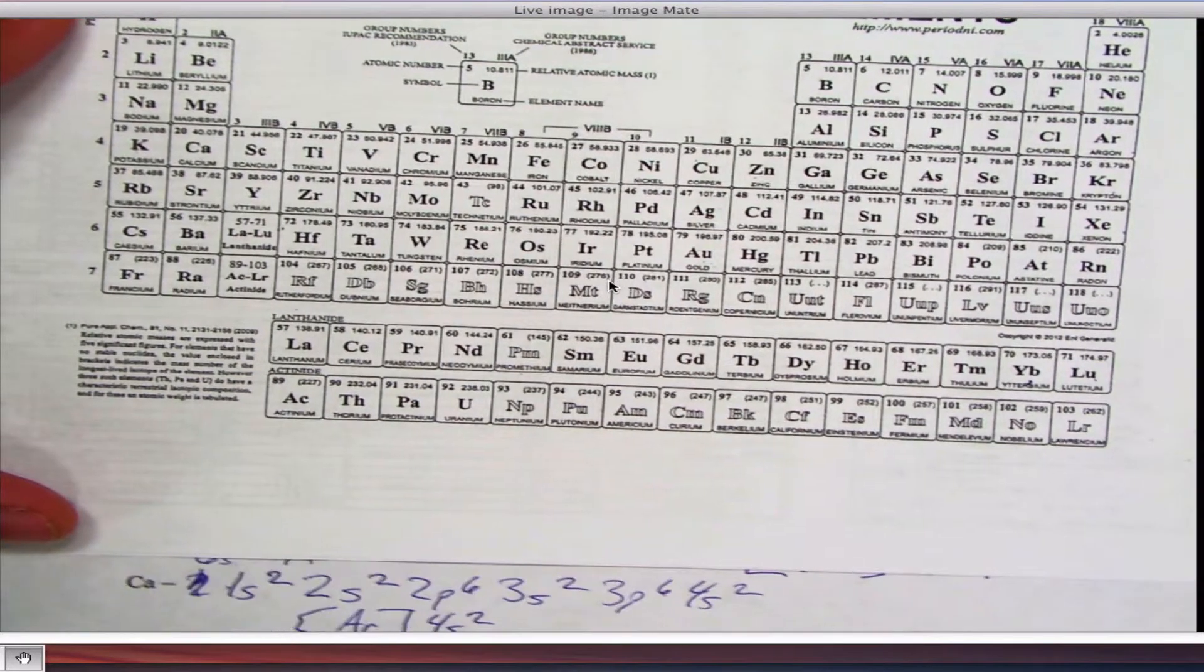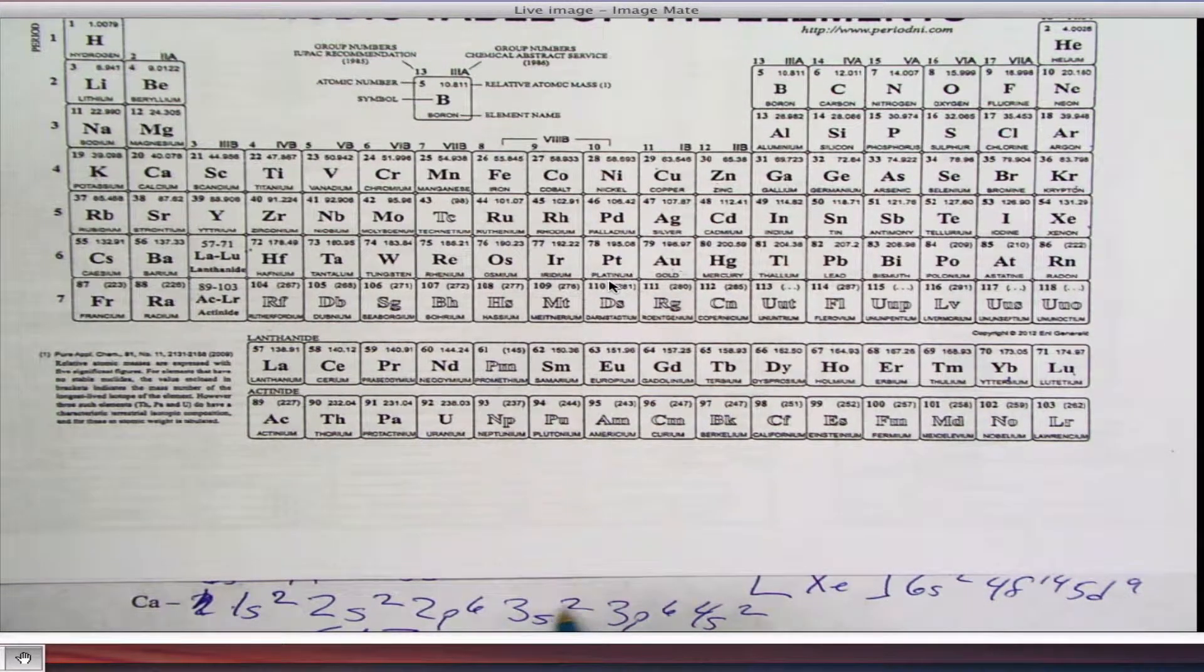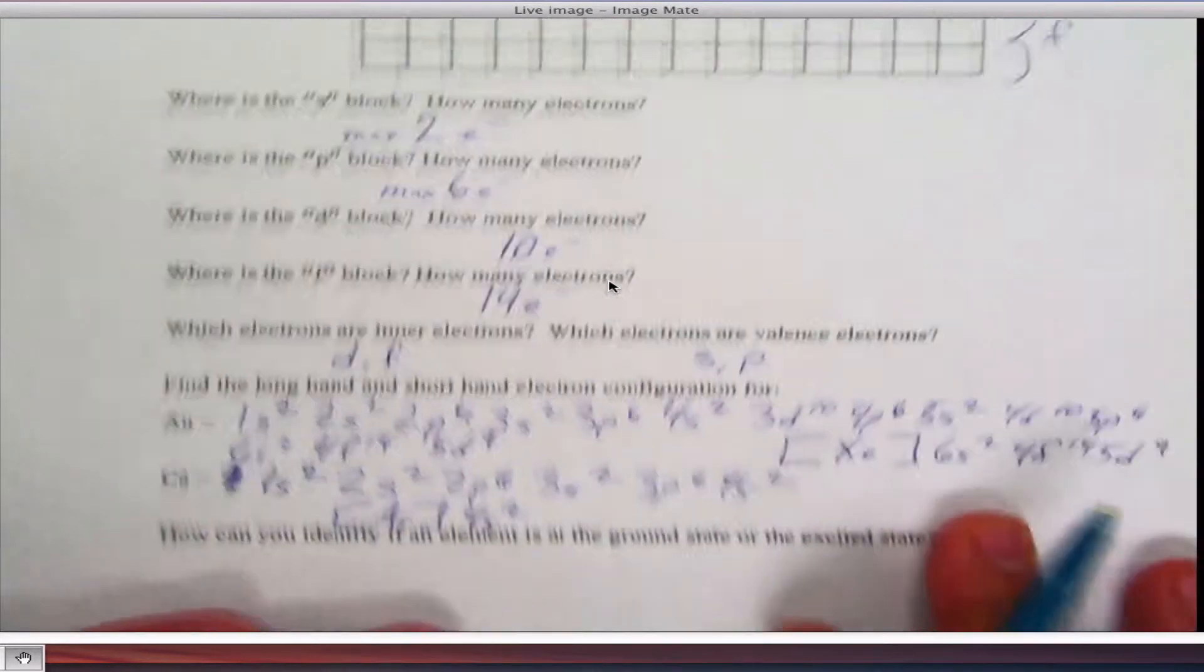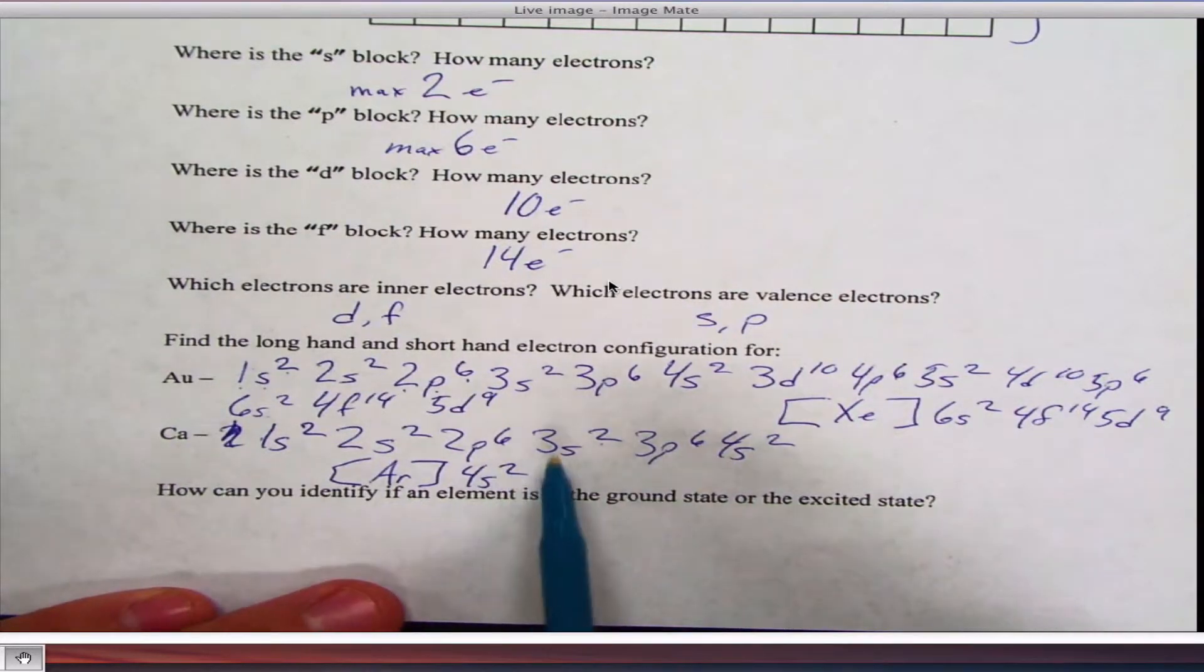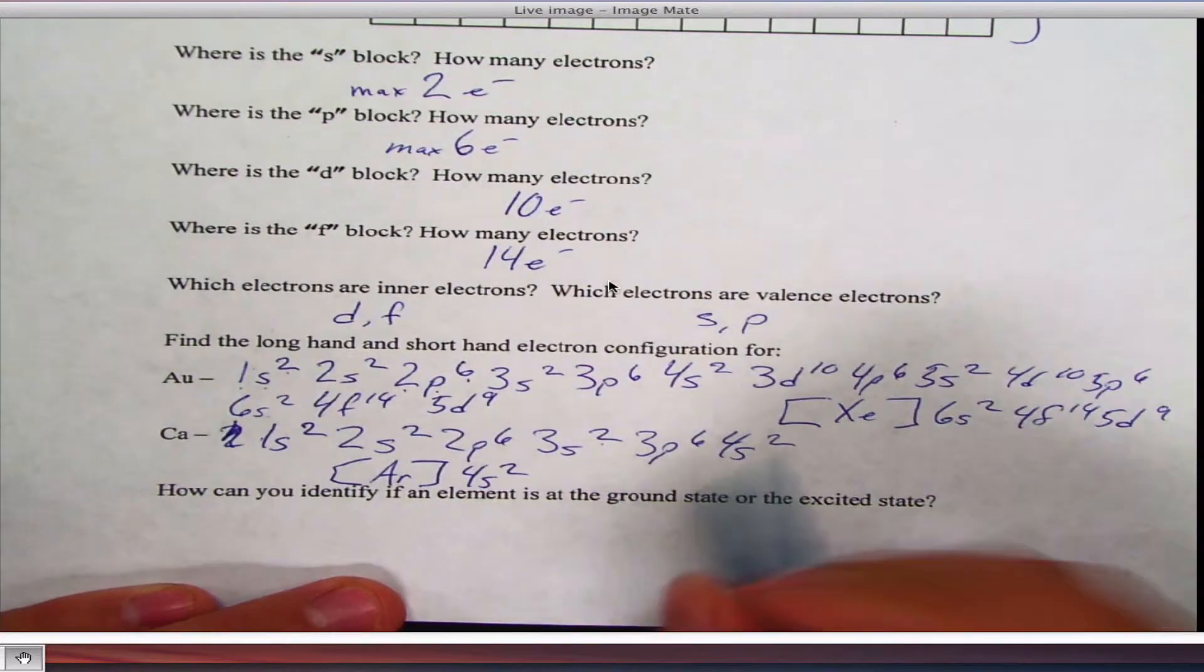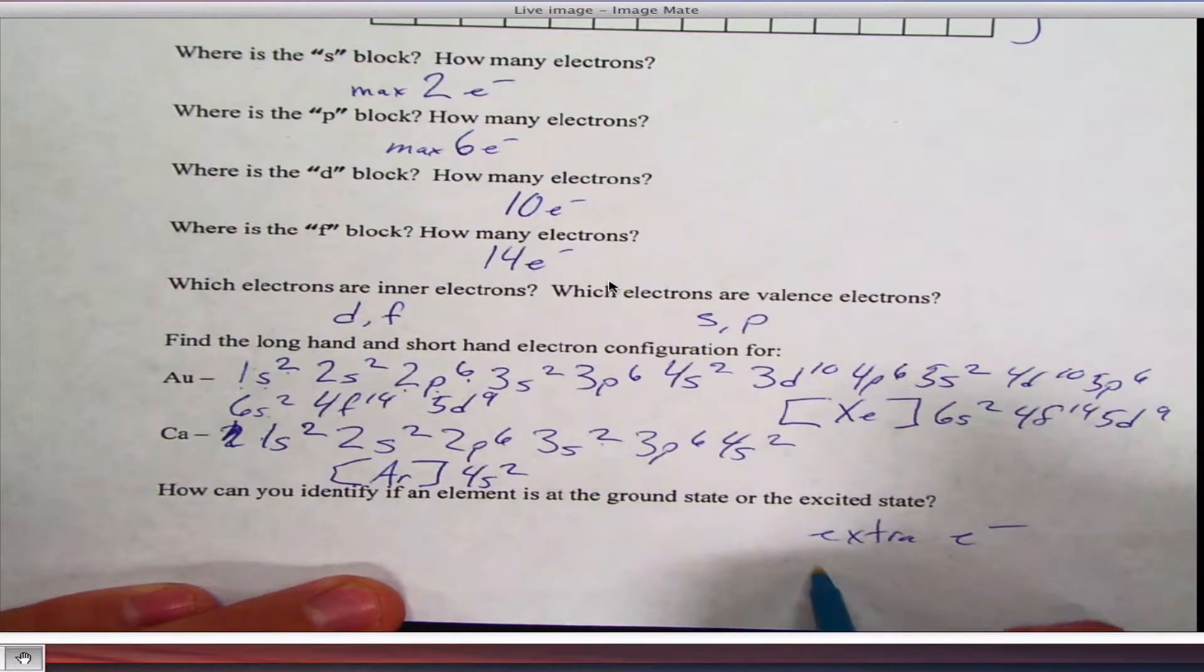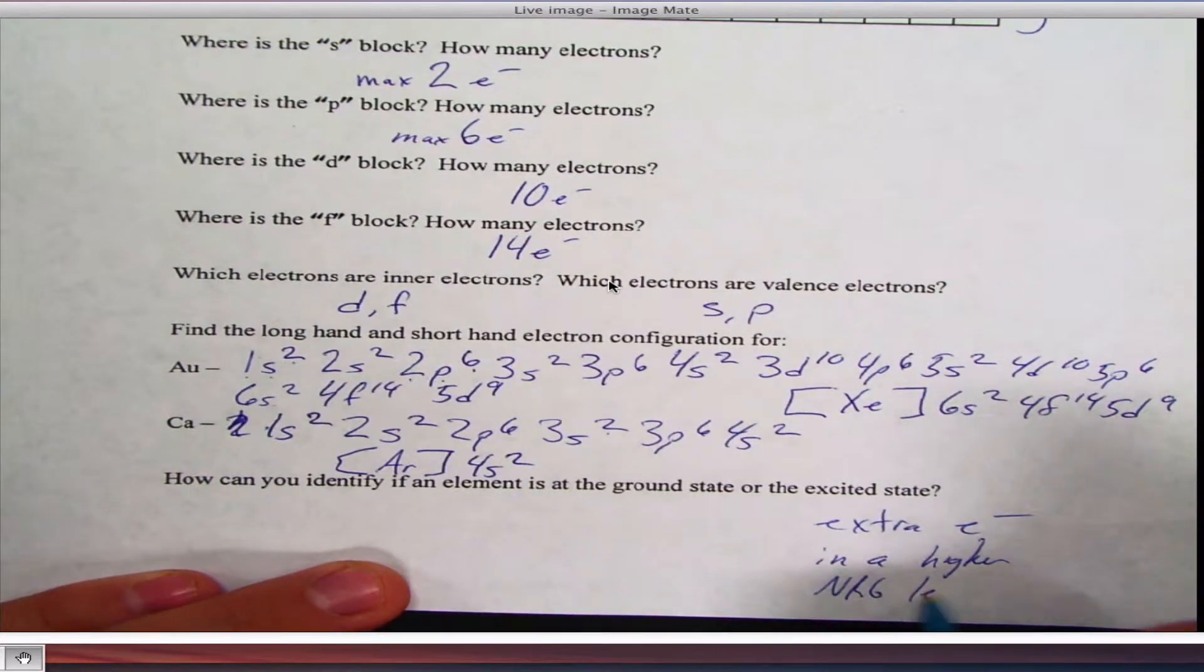Now, what's going to happen when elements want to bond and they get excited and they jump? What happens is these electrons will jump energy levels. It's like one will go from the three to, say, the fourth or the fifth or the sixth. So how can you identify a ground state atom? These are all ground states because all the electrons are where they should be. If there's extra electrons in a level above, that means it's excited. So basically you can tell an excited electron because they have extra electrons in a higher energy level.